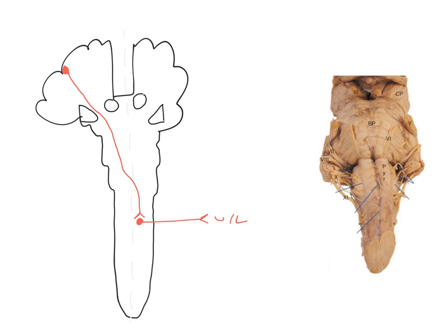A peduncle is simply a bit of white matter that connects a hemisphere to the brain stem. There are cerebral peduncles connecting cerebral hemispheres to the brain stem and cerebellar peduncles connecting cerebellar hemispheres to the brain stem. This is where the cerebral peduncles are and that's where the corticospinal tract is running down to enter the brain stem.